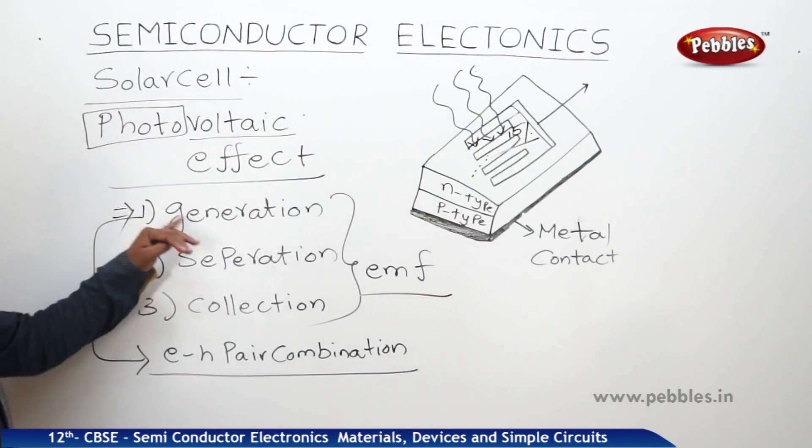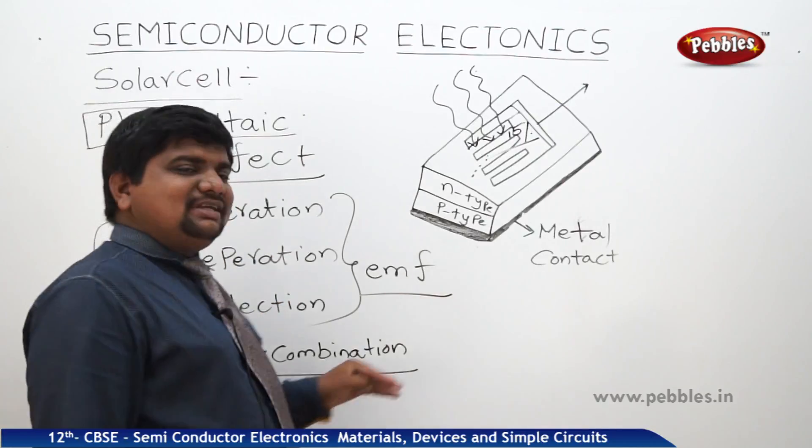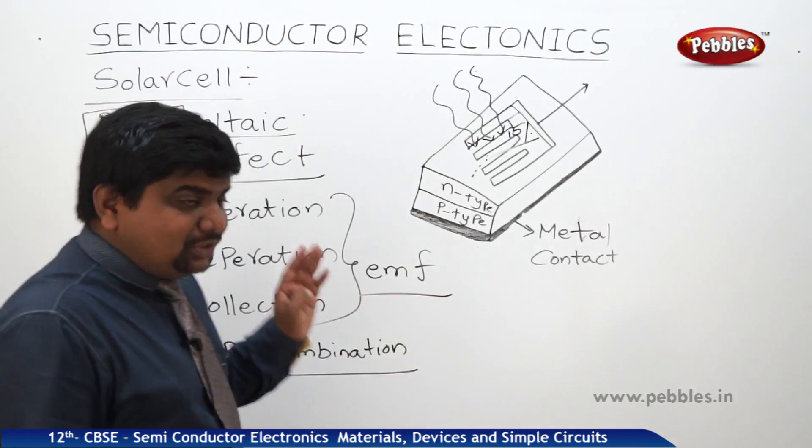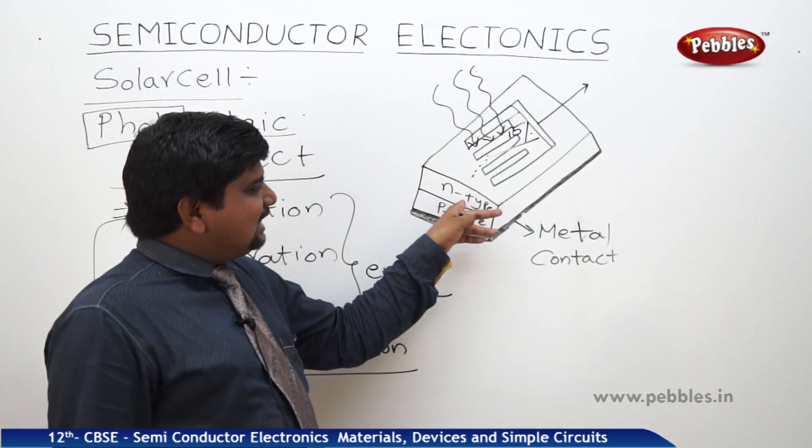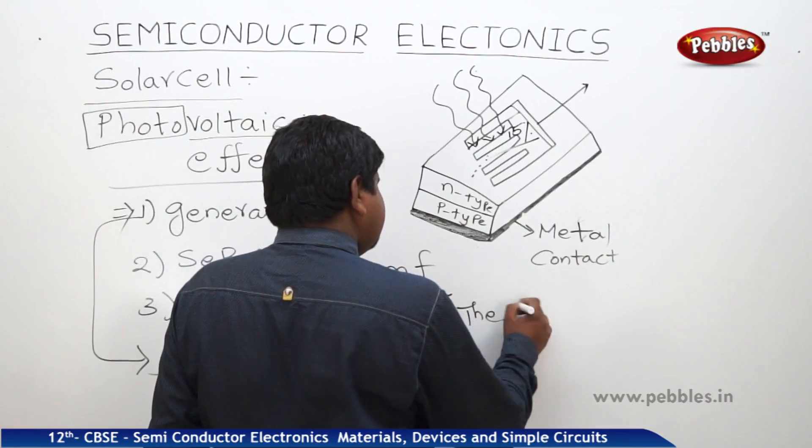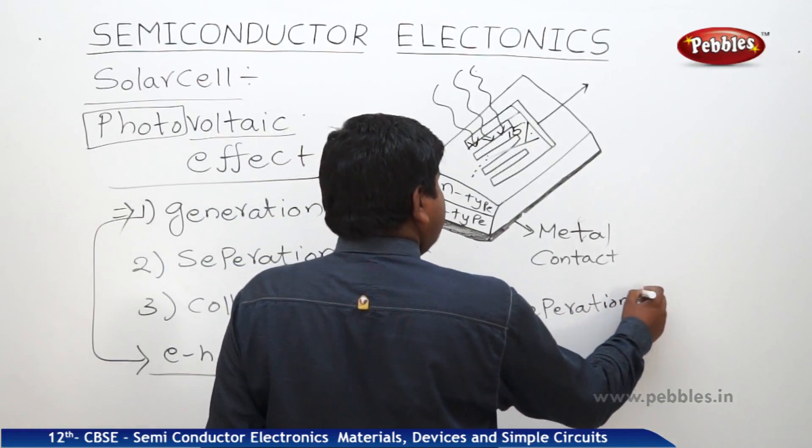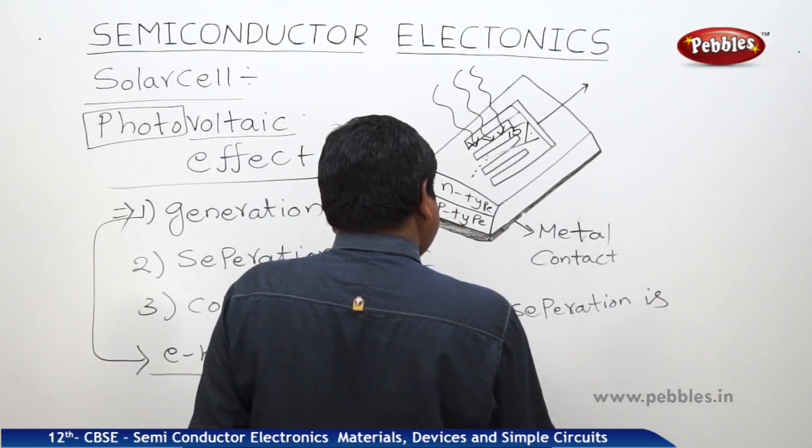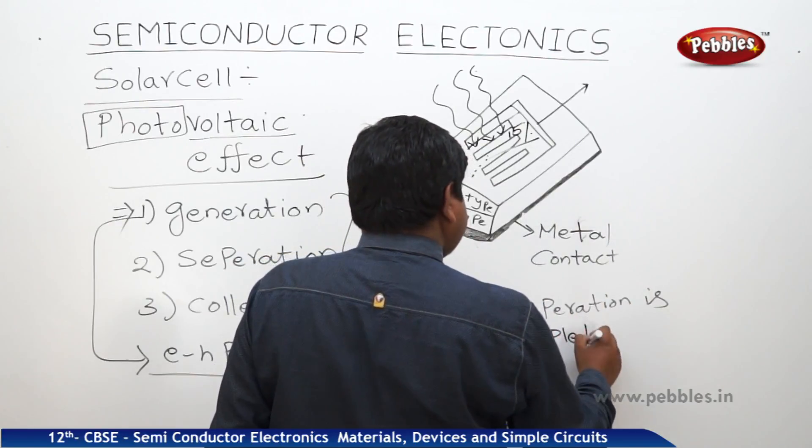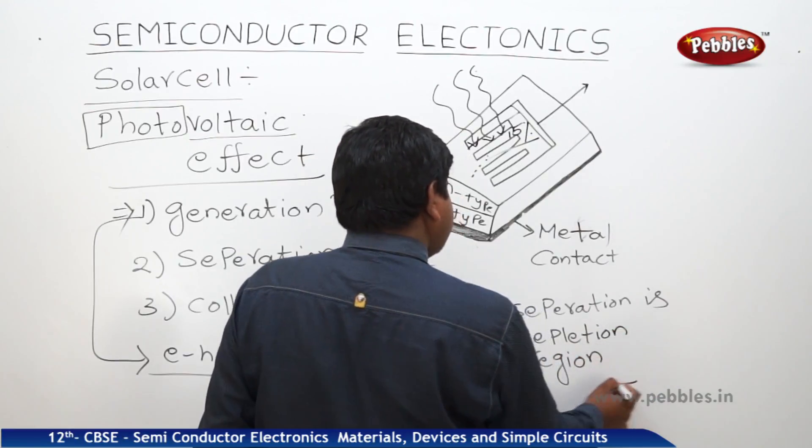If this is the case, one path was over and what is the meaning of separation? The very next step is separation and this paired combination will be separated due to the depletion layer between the n-type and P-type. The separation is due to the depletion layer between the n-type and P-type.